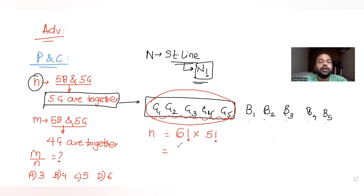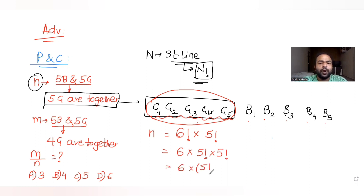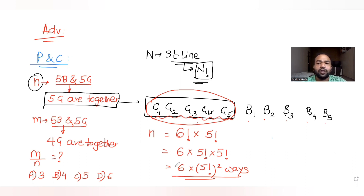Once we arrange these six entities in 6! ways, the five girls within that one group can rearrange among themselves in 5! ways. So n = 6! × 5! = 6 × (5!)².